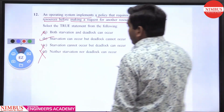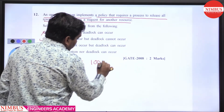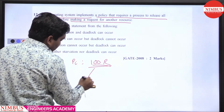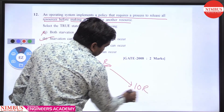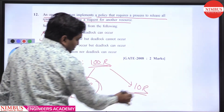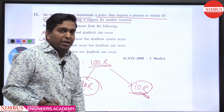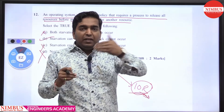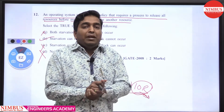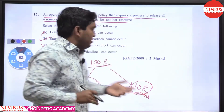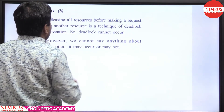Why can starvation occur? Suppose process PA requires 100 instances of resource R. If it is currently holding 90 instances, it cannot proceed to execution without the remaining 10. Under this policy, it must release the 90 instances first, then request all 100 again. When it acquires 90 again, it must release those and retry — so a process may keep cycling without ever completing, which is starvation.